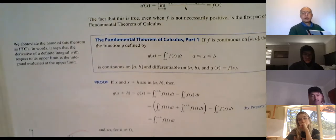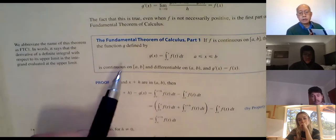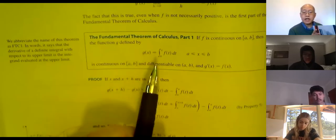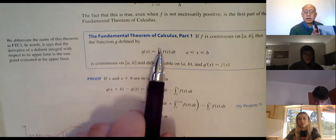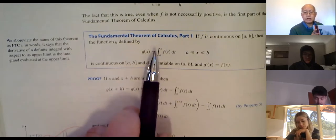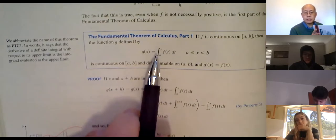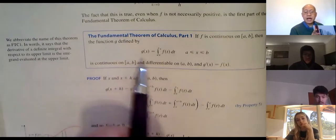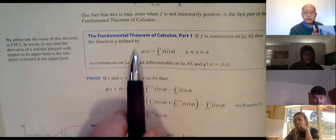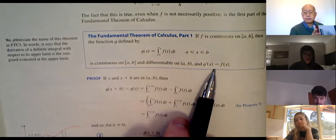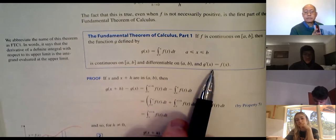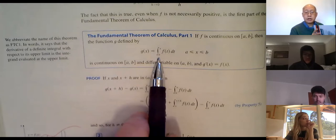For FTC Part 1: g of x is defined as the integral from a to x of f of t dt. The key thing is constant on the bottom, variable on the top. I'll show you what happens if it's reversed or if there are two variable expressions. But basically the idea is that g prime of x equals f of x — so if you want the derivative of this function, all you do is put that x right there and you get f of x.